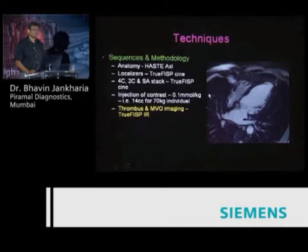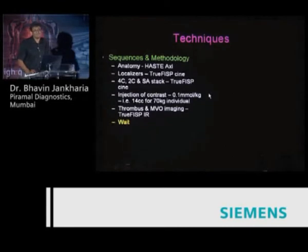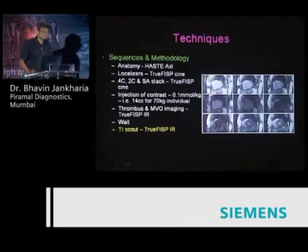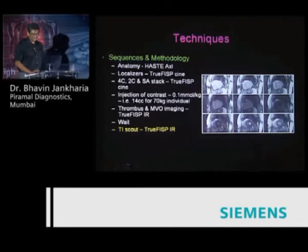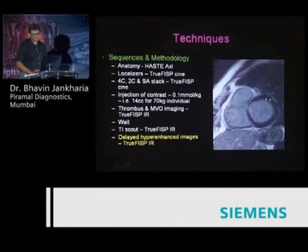At this point, image for thrombus and microvascular obstruction, which you get with acute and subacute infarcts. This is done in the 4-chamber, 2-chamber, and short axis images. Then wait about 2-3 minutes. We no longer attempt coronary artery MR imaging since the availability of 64-slice CT. After about 5-7 minutes from injection, do the TI scout — a sequence pioneered by Siemens — which gives images at multiple TI values. Choose the image where the myocardium is the blackest, add 20 milliseconds to that TI time, and you get crisp delayed hyper-enhanced images.